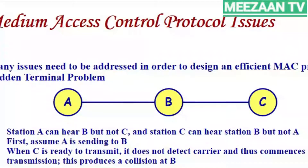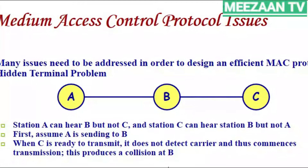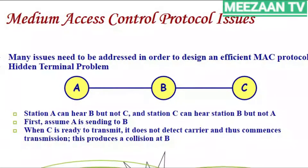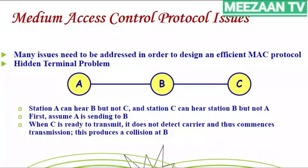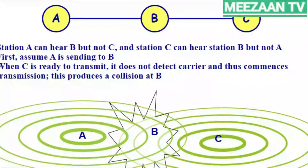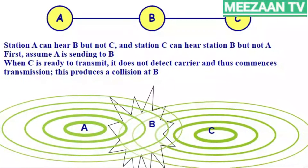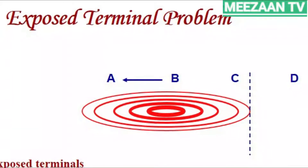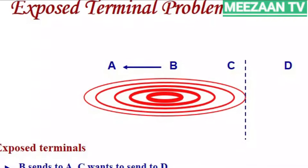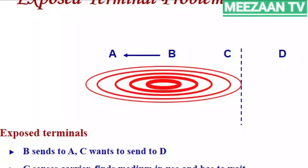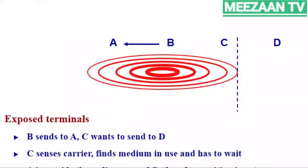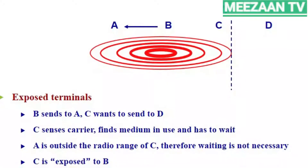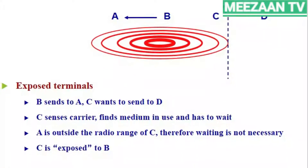The hidden node problem arises when using a simple MAC protocol for wireless LAN. With three nodes A, B, and C — node A can hear B but not C, and C can hear B but not A. When A is sending to B and C is ready to transmit, C does not detect the carrier and commences transmission, producing a collision at B. In the exposed node problem, station B wants to communicate with A while station C wants to communicate with D. C senses the carrier is busy and waits, but since A is outside C's radio range, waiting is unnecessary — C is unnecessarily exposed to B's transmission.